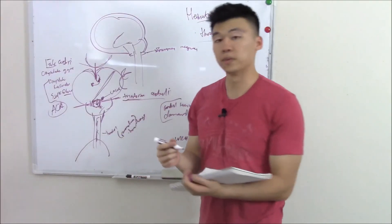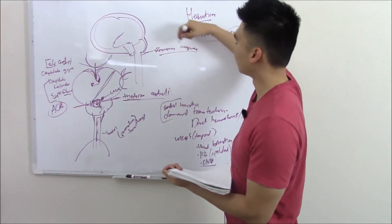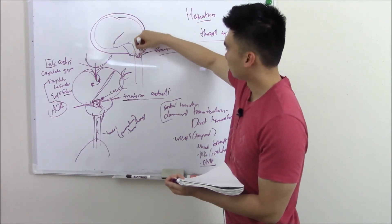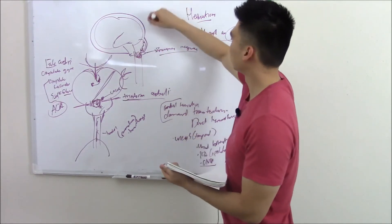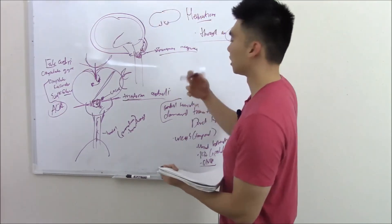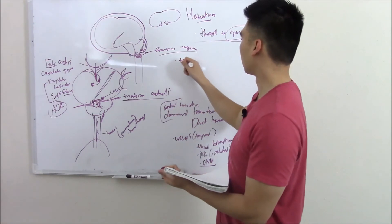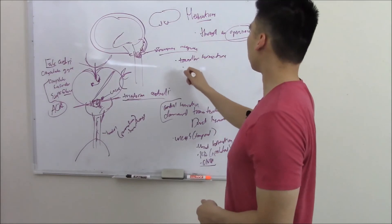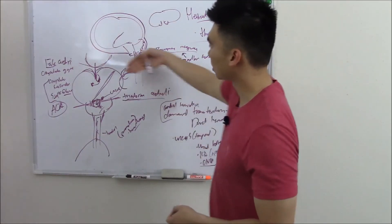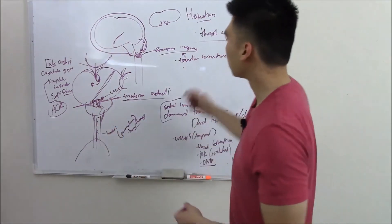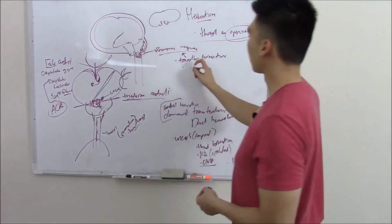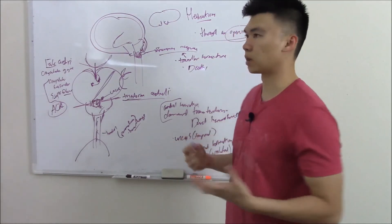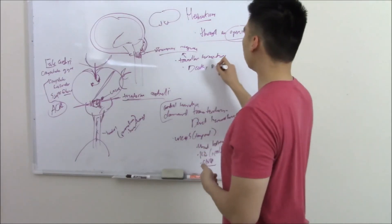The last opening that your brain can herniate through is your foramen magnum. This is usually your cerebellum. There's tissue in your cerebellum that looks like tonsils, so we call it cerebellar tonsils. They call it tonsillar herniation through your foramen magnum. Similar to downward herniation that compresses your brainstem, this will also compress your brainstem and cause death, usually by inhibiting respiration.